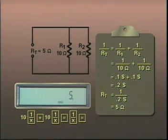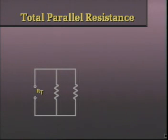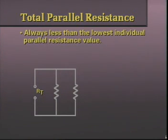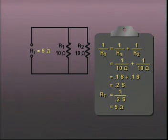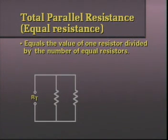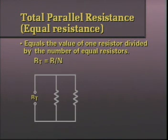Notice that when we added a second resistor in parallel with the first, the total resistance went lower. The single most important rule to remember regarding resistors in parallel is that the total parallel resistance is always less than the lowest individual parallel resistance value. We can also illustrate a special case involving equal parallel resistances: the total resistance equals the value of one of the branch resistances divided by the number of equal resistors. That is, R sub T equals R divided by N, the number of equal resistors.